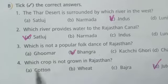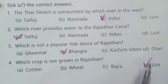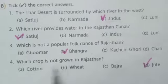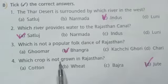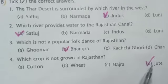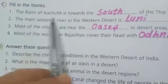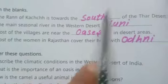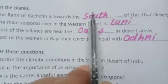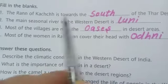Which crop is not grown in Rajasthan? Jute. The Rann of Kutch is towards the south of the Thar Desert — South.